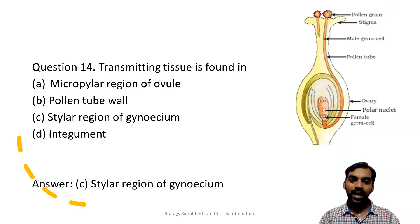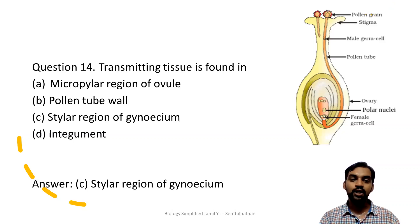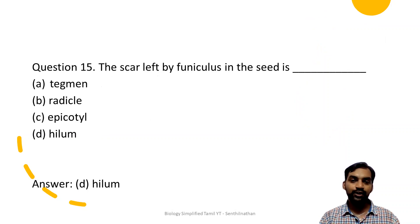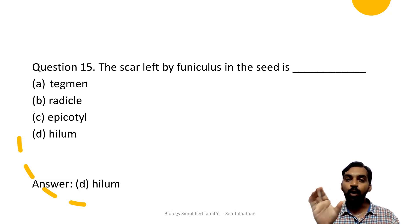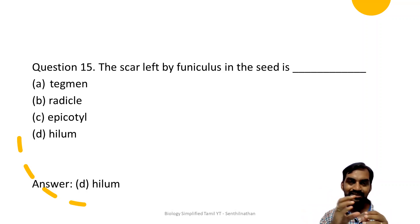Transmitting tissue is found in the style region of the gynoecium. In the style region, the pollen tube moves smoothly through the transmitting tissue. The scar left by the funiculus in the seed is called the hilum. The hilum is the scar on the seed where the funiculus - the stalk of the ovule - was attached.